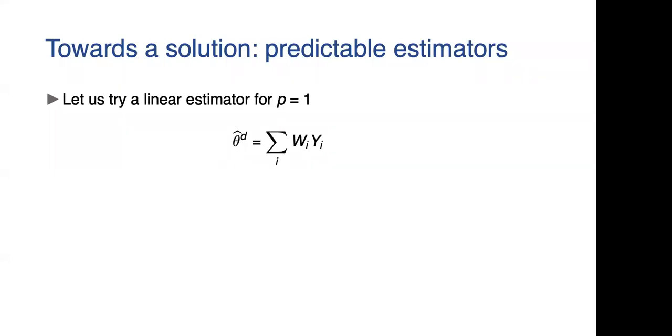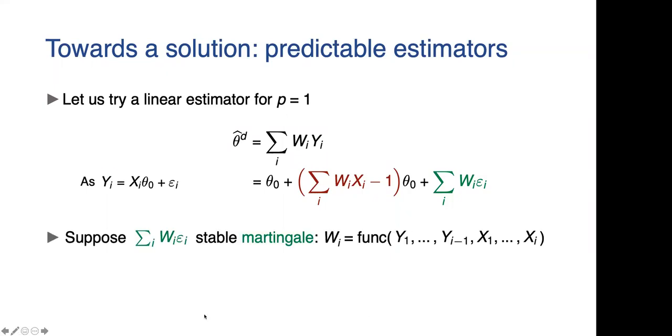For any set of weights Wi that correspond to the outcomes, you can use the model equation and write theta hat as the truth, plus something that's proportional to the truth, plus something that's proportional to the noise. This is true for any set of weights W. It's just an algebraic identity. There's nothing smart happening here, but let's try and isolate the bias. In particular, let's try and make sure that the bias is just in the first term.